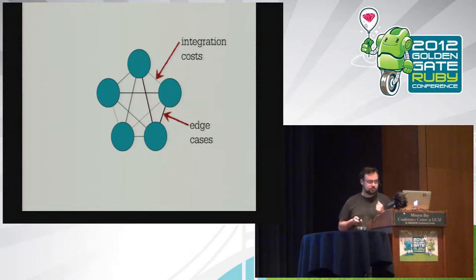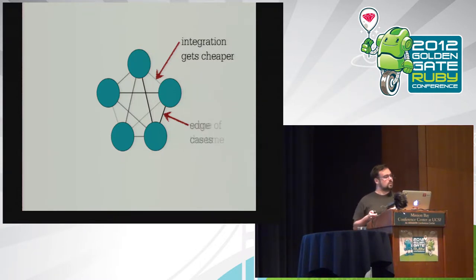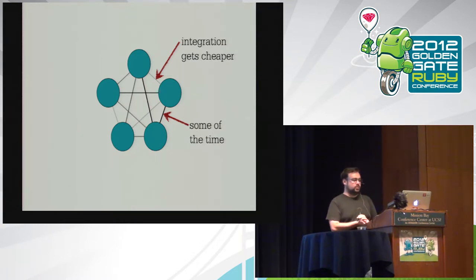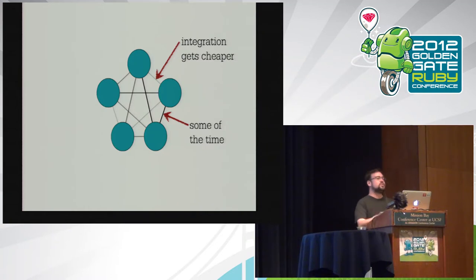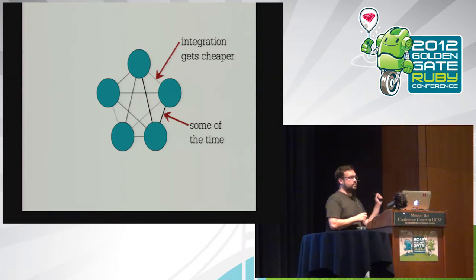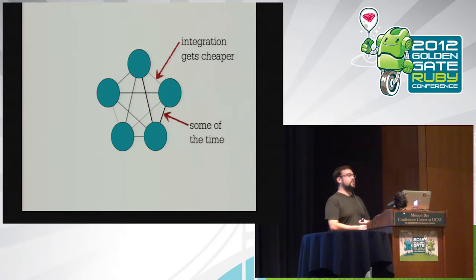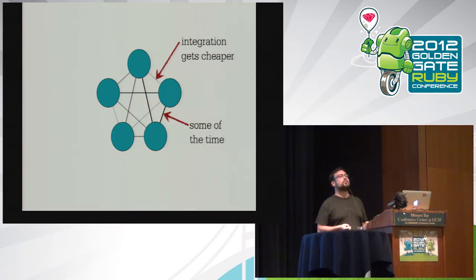But integration only gets cheaper some of the time. Even though integration gets cheaper, it doesn't always get cheaper. Which means that if you start off with the idea of 'why don't we just front-load the whole thing, build standards for every single link on this chain' — how you look up templates, how you talk to templates, how you render things, how you respond — you're going to end up spending a whole bunch of time building standards that don't end up mattering, that don't end up really reducing transaction costs. It ends up being cheaper to not have bothered.